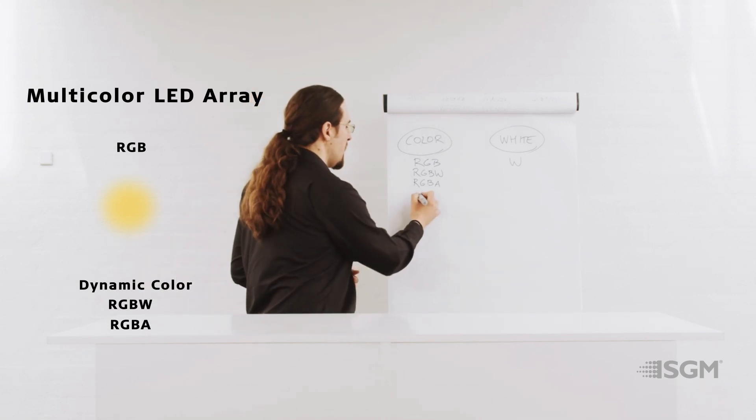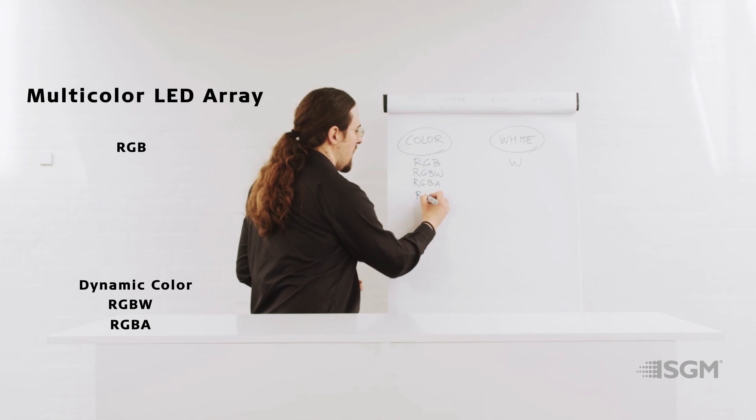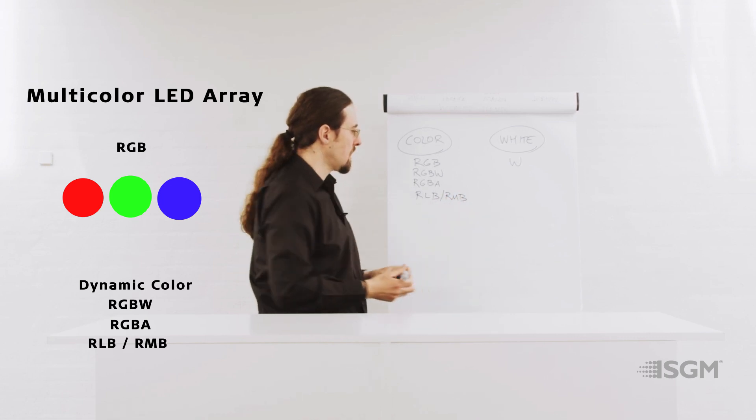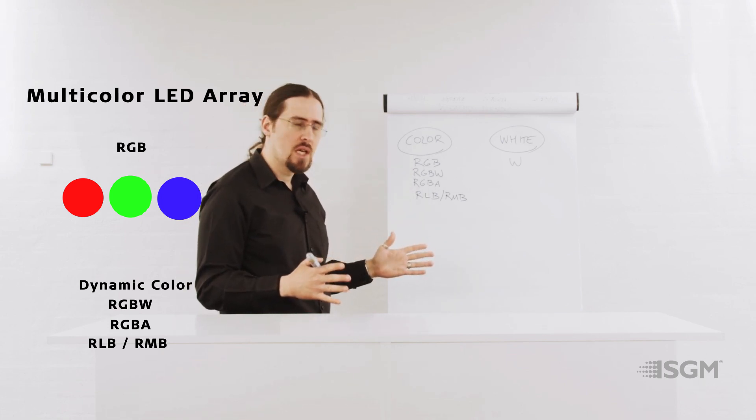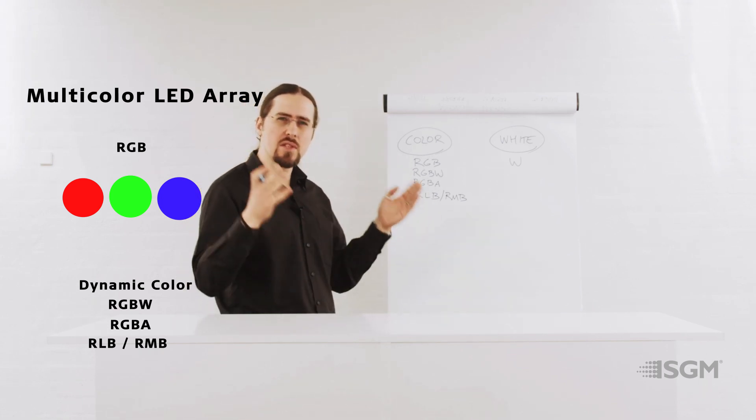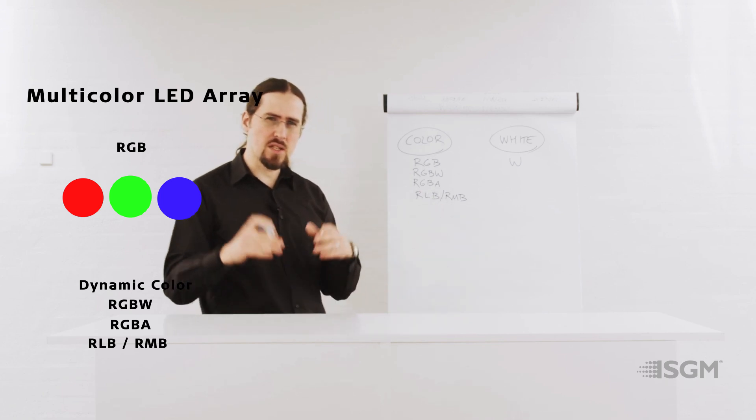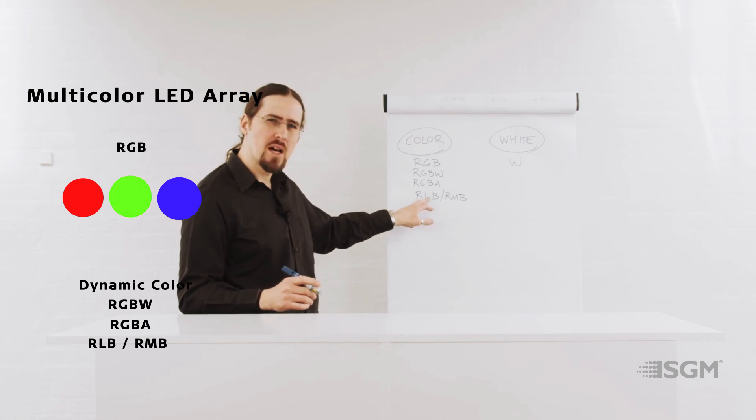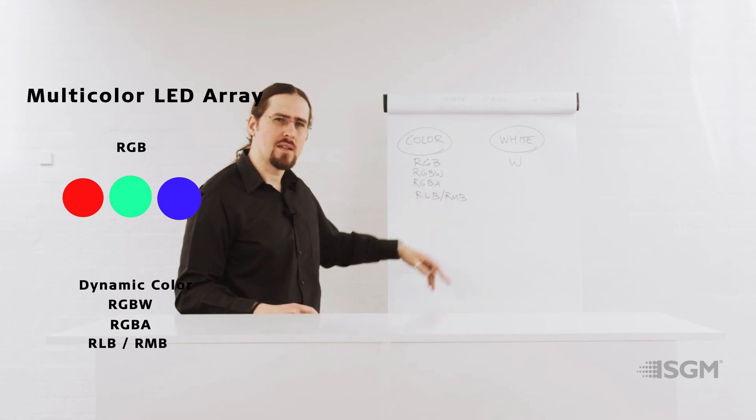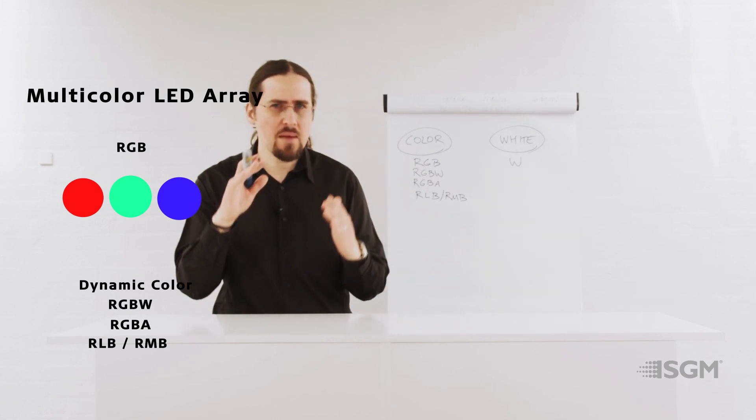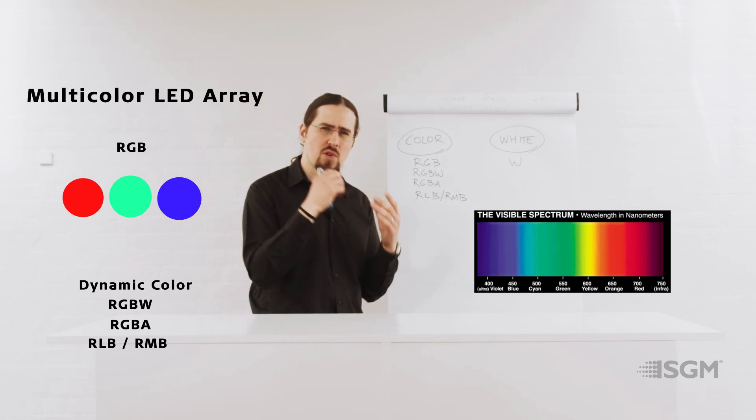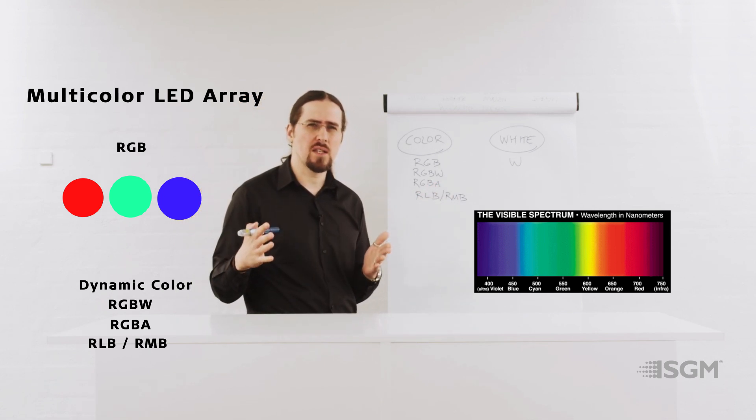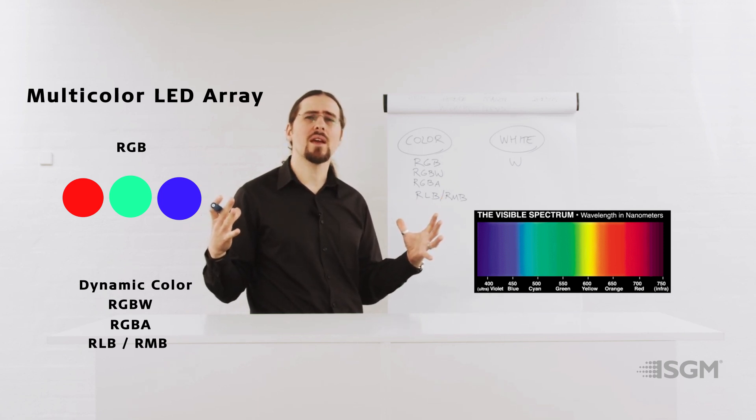Another option that you have is either RLB or RMB. And this concept is very similar to the RGB idea. You still have a red LED, you still have a blue LED. What you are changing here is the green LED into either a lime LED or a mint LED. More or less they will cover the same area of the color spectrum, the same way we saw with the amber. It's trying to fill a gap in the color spectrum of the LED technology when you mix all these colors together to make a good white.